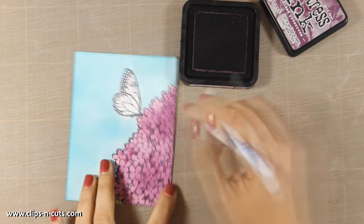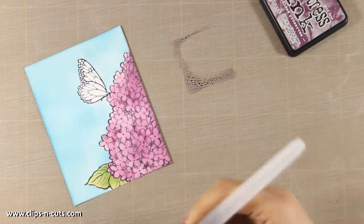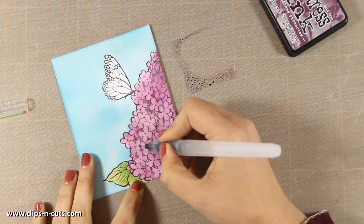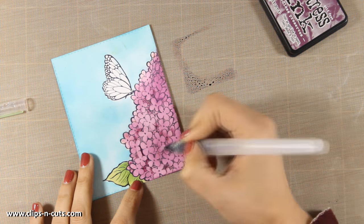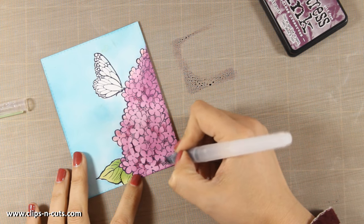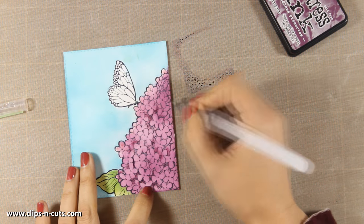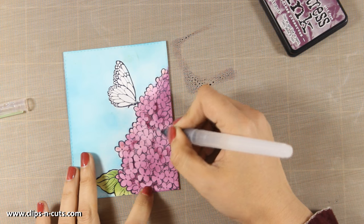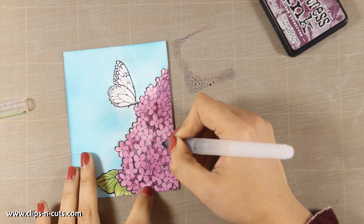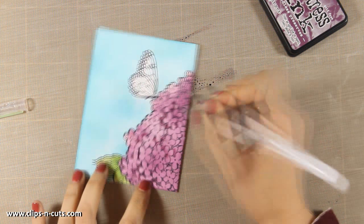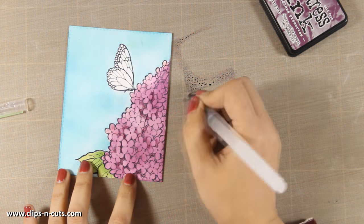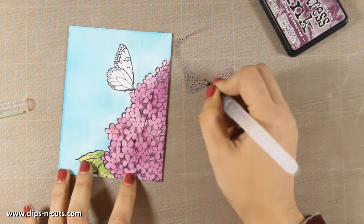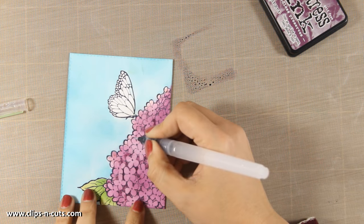So I am going to smoosh a little bit of ink on my craft mat and then I am going to use my watercolor brush. Now I am not working on a watercolor paper so I need to control how much water I add on my paper but this is a really quick method to add just a little bit of shadow here and there. That doesn't take a lot of time.